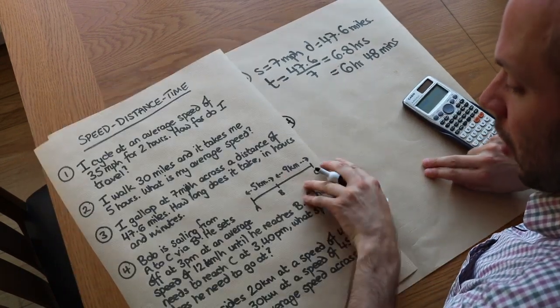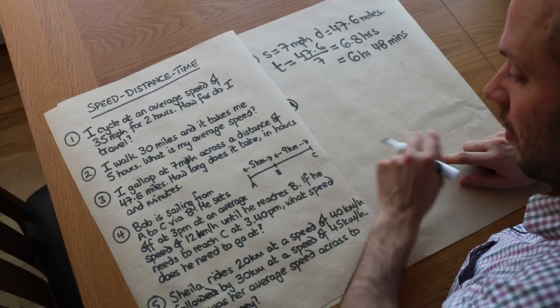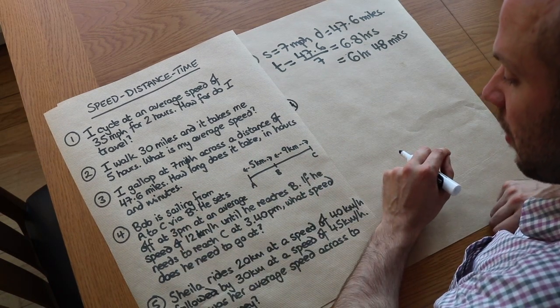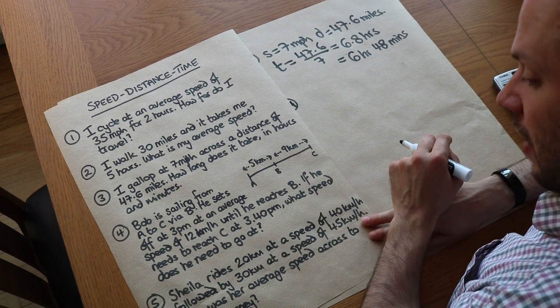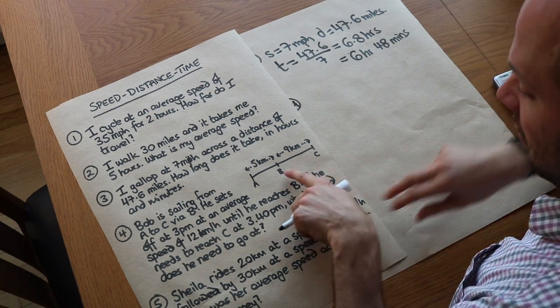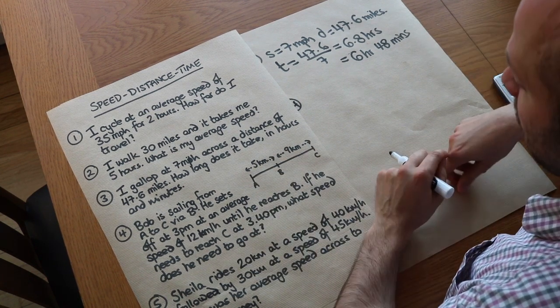Question four. Bob is sailing from A to C via B. He sets off at 3pm at average speed of 12 kilometres per hour until he reaches B. If he needs to reach C at 3:40, what speed does he need to go at? Now let's use the information we've got so far and see how we can run with it.